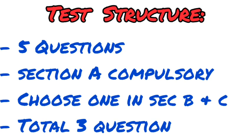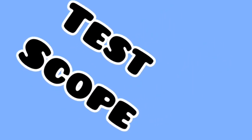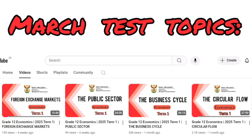In question one you will also notice it covers different topics — it's not classified to just one main topic. It's going to cover different things from term one. In section A, everything is going to be in there. Then in sections B and C, that's where you choose one question each, meaning in total you will have answered three questions out of five. In section B and C you only choose one question each.